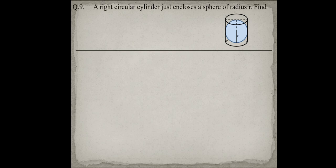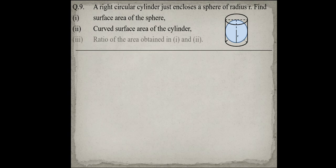In question number 9, a right circular cylinder just encloses a sphere of radius r. Find the surface area of the sphere, the curved surface area of the cylinder, and the ratio of the areas. The sphere fits perfectly inside the cylinder, touching the side surface as well as the top and bottom. The surface area of the sphere is simply 4πr², since radius r is given.